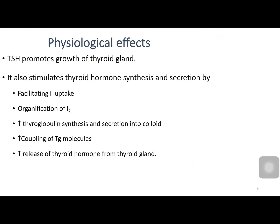The important physiological effects of TSH are: it promotes the growth of the thyroid gland, and it also stimulates production of thyroxin hormone by facilitating iodine uptake, organification of iodine, increasing thyroglobulin synthesis and secretion into the colloid, and by increasing the coupling of thyroglobulin molecules. It also increases thyroid hormone release from the thyroid gland.